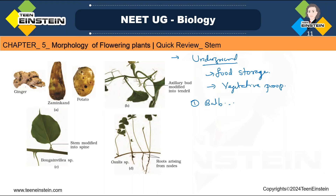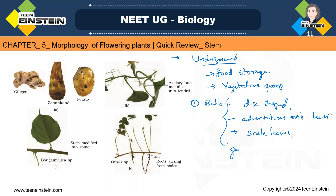A bulb has a disc-shaped stem with adventitious roots at the lower side and scale leaves on the upper side. For bulb, you will remember garlic or onion first. On garlic, the disc-shaped stem is almost at the bottom with adventitious roots on the lower side and scale leaves on top. Onion and garlic are the examples for bulb.